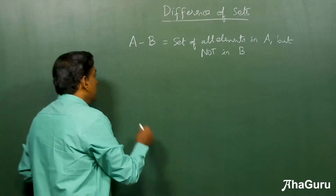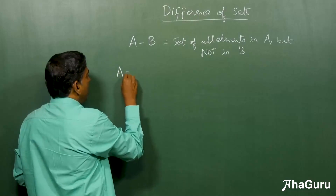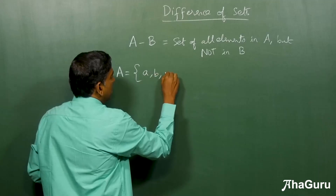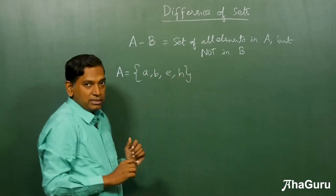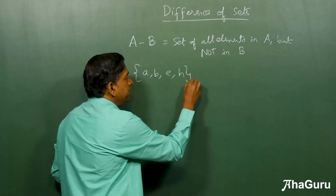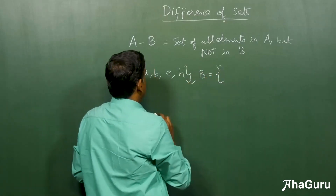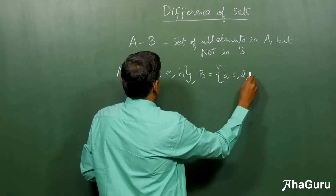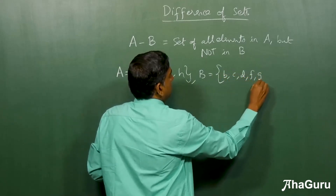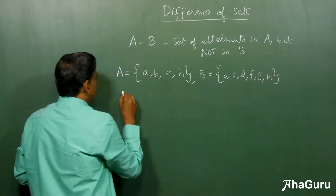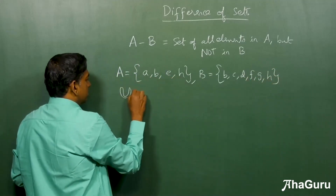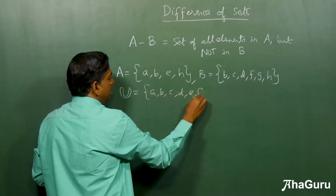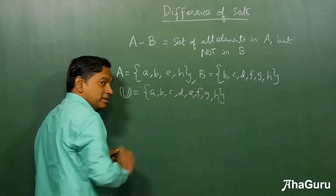Let's see this with an example. Let set A be {a, b, e, h}. And set B be {b, c, d, e, f, g, h}. And the universal set — I'll tell you why we need this — is {a, b, c, d, e, f, g, h}.